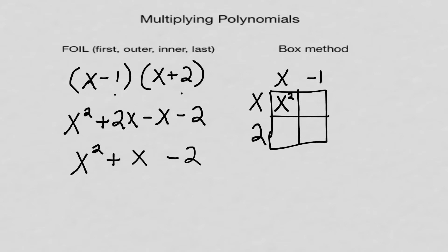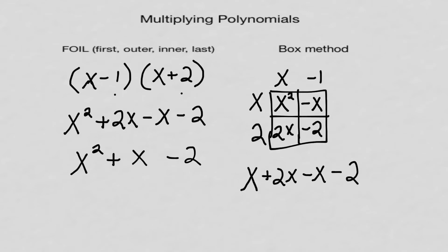The upper right-hand box: negative 1 times x is minus x. Lower left-hand side: x times 2 is 2x. Finally, negative 1 times 2 equals negative 2. Bringing it all together: x squared, plus 2x, minus x, minus 2. Cleaning up the middle: 2x minus x is plus x. So the answer is x squared plus x minus 2 — the same as with FOIL.